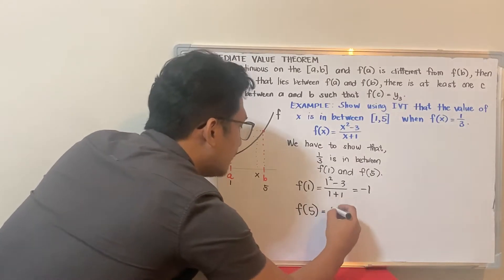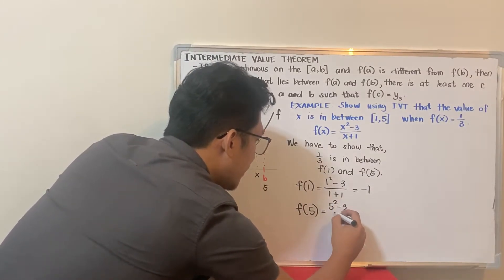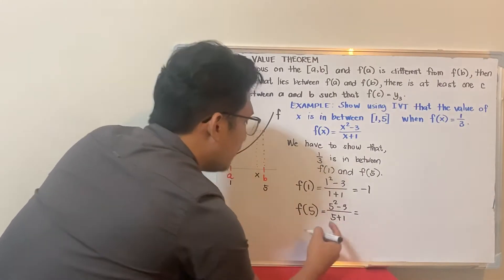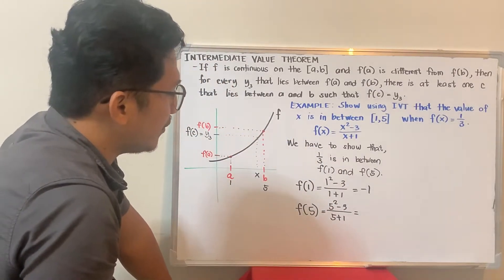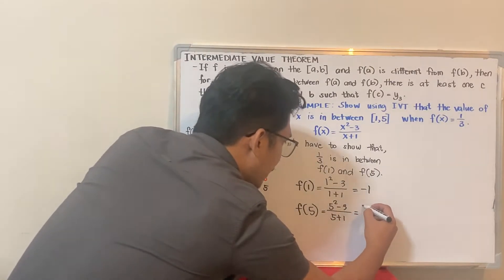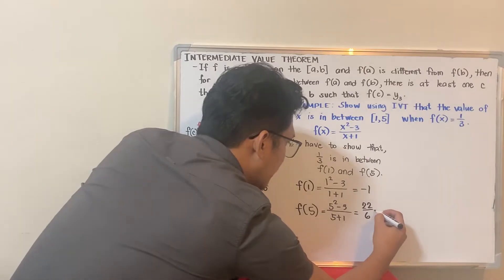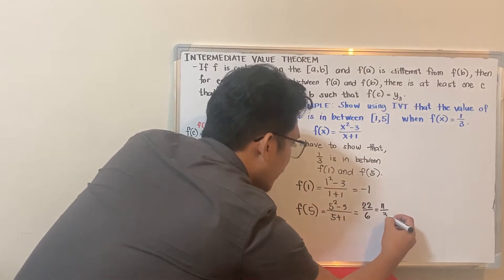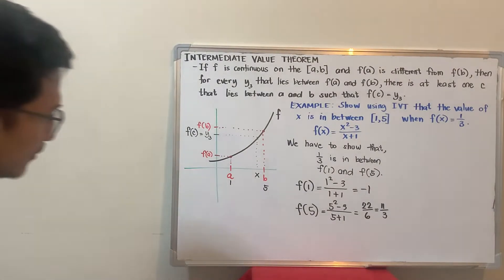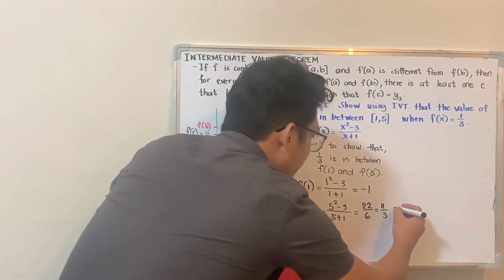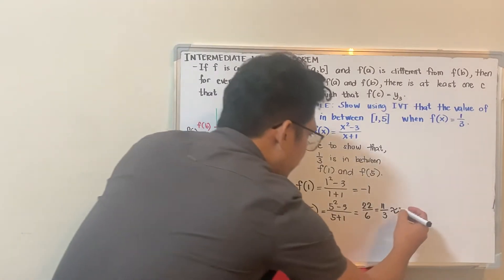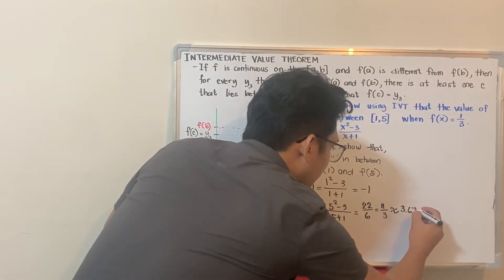Next is F of 5, which is equal to 5 squared minus 3 all over 5 plus 1. So it's 25 minus 3, so it's 22 over 6. When you reduce it, that's 11 over 3, which is approximately 3.67.